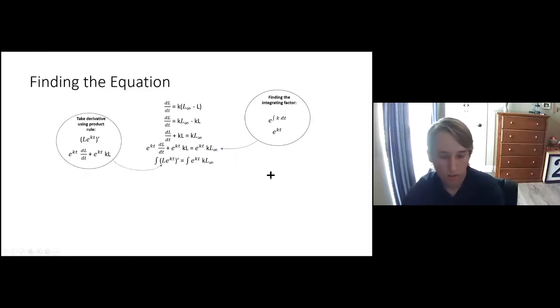So next thing we do is we want to integrate it now. There's a sneaky thing if you look at the left side of the equation, you can just integrate both parts, but if you look really closely it's actually like a reverse product rule. So essentially you can just rewrite it as L times e to the kt prime.